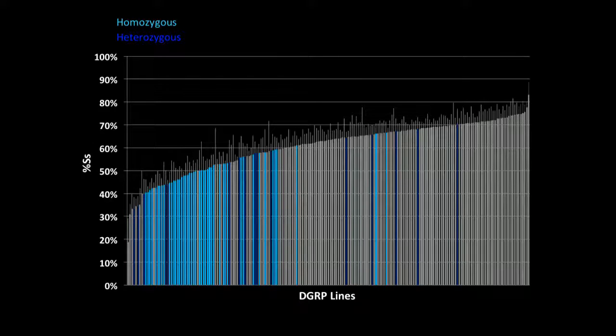If I map that SNP onto the graph I just showed you, it's predominantly in lines with low spineless expression, as you can see by the light blue bars, these are lines that are homozygous. We've creatively named it the low spineless SNP.